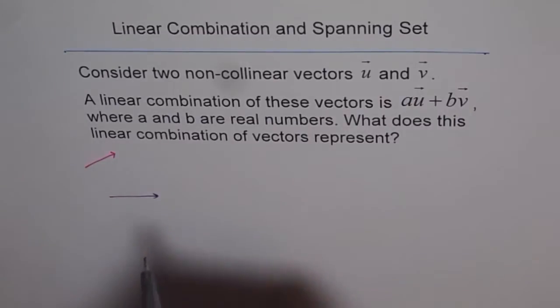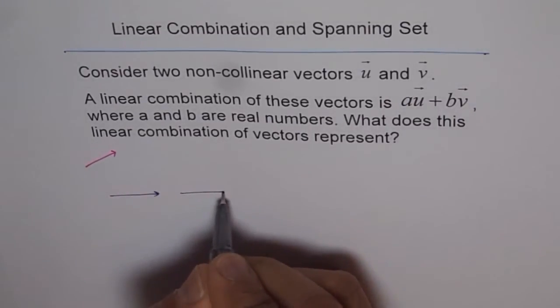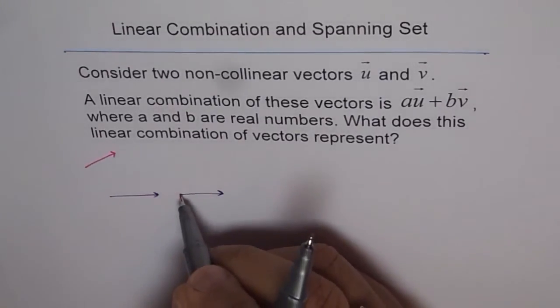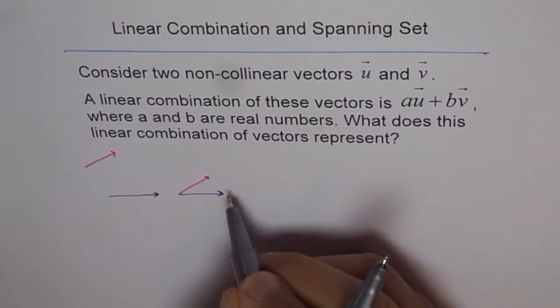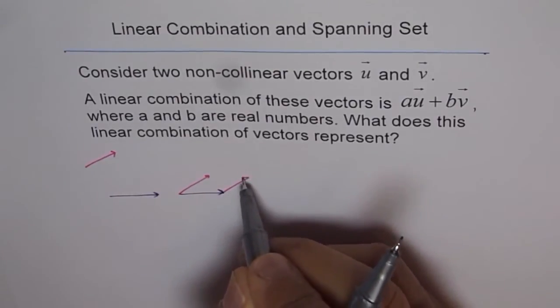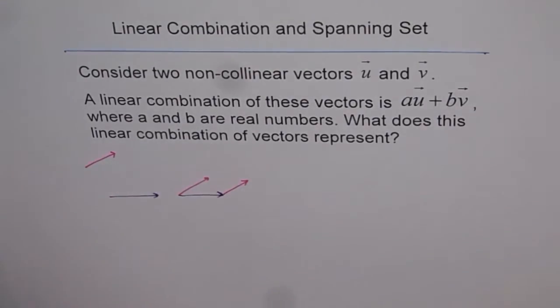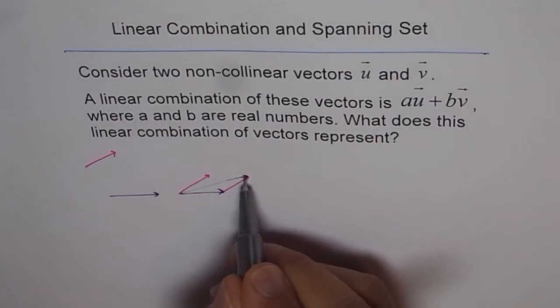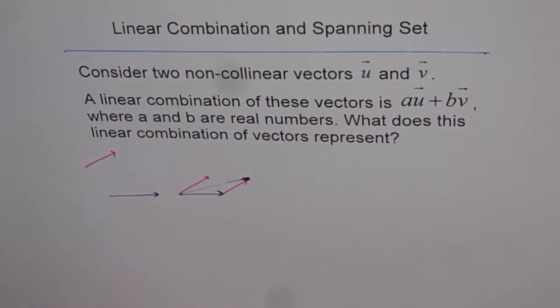So if we just combine them as such, let us say this is u and we place tail to tail the vector v. In that case, the resultant will be, we can draw a parallelogram here and get the resultant. The resultant is this, so it represents a point here.